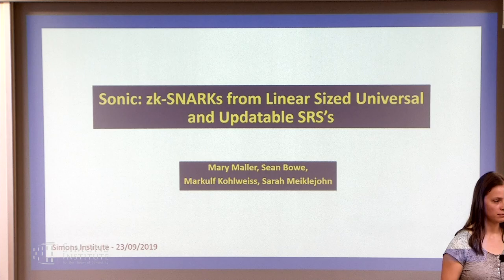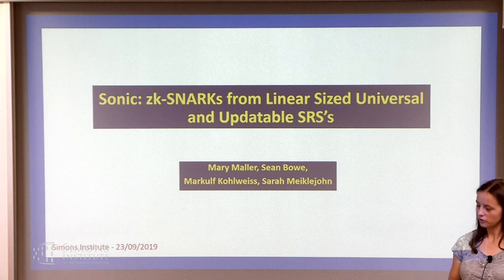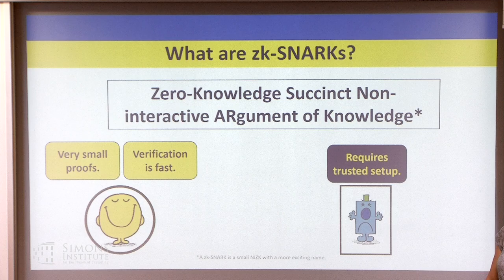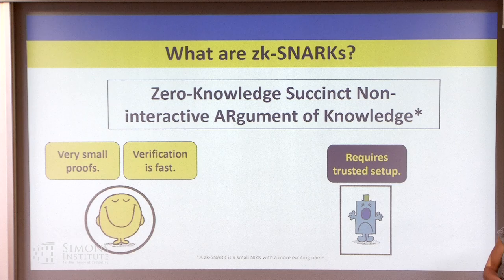We're not getting rid of the trusted setup entirely, but we're trying to mitigate the trust concerns to the point where they are not a concern. Why do we want SNARKs over other protocols? SNARKs have some trade-offs, but one thing that's very nice is that verification is very, very small — typically a couple of pairing equations per proof.